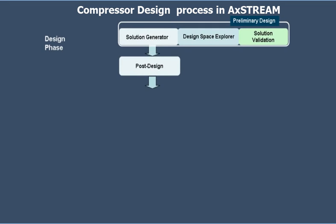The compressor design process with AXE Stream consists of four major phases. The design phase includes preliminary design and post-design tasks, and is powered with an inverse solver. The main objective of preliminary design is to generate a number of solutions suited to design specifications and then select the best one. Post-design tasks deal with a single solution chosen during preliminary design, with the objective to adjust it to particular design requirements while preserving machine performance.